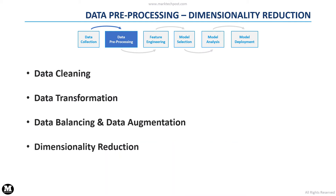Another process we can consider is dimensionality reduction. Dimensionality reduction techniques allow us to project high-dimensional data into a lower-dimensional subspace, maintaining the important properties of the original data. This approach is sometimes useful to make the predictive process easier and less challenging.